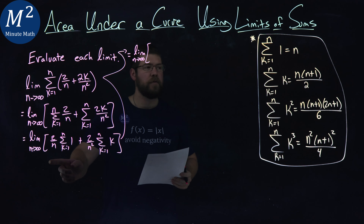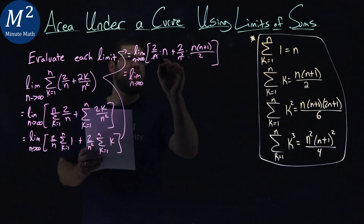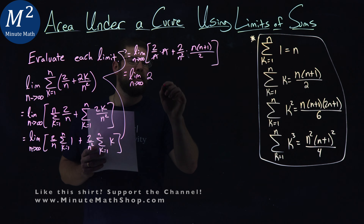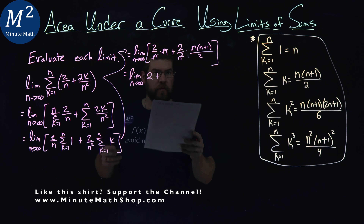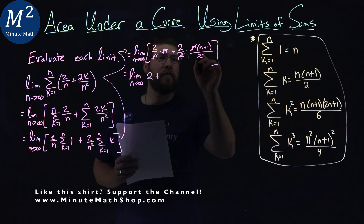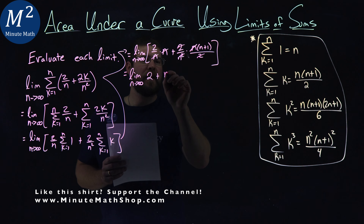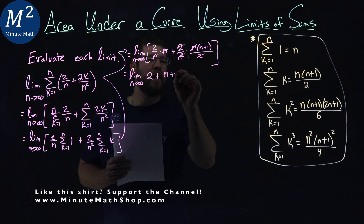So now we just have to do some nice simplification. The limit as n approaches infinity: the n's cancel in the first term so we have a 2, plus — in the second term the n squared in the denominator and the 2's cancel, leaving us with (n plus 1) over n. But we can't take the limit yet since we have infinity over infinity, so let's use some algebra.